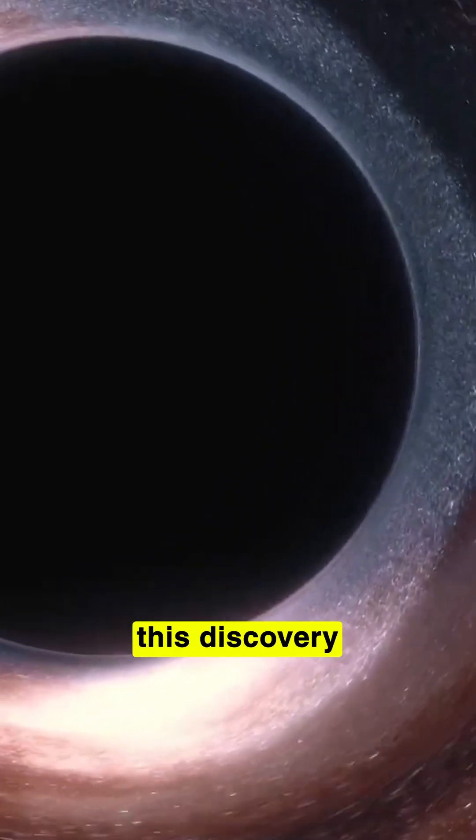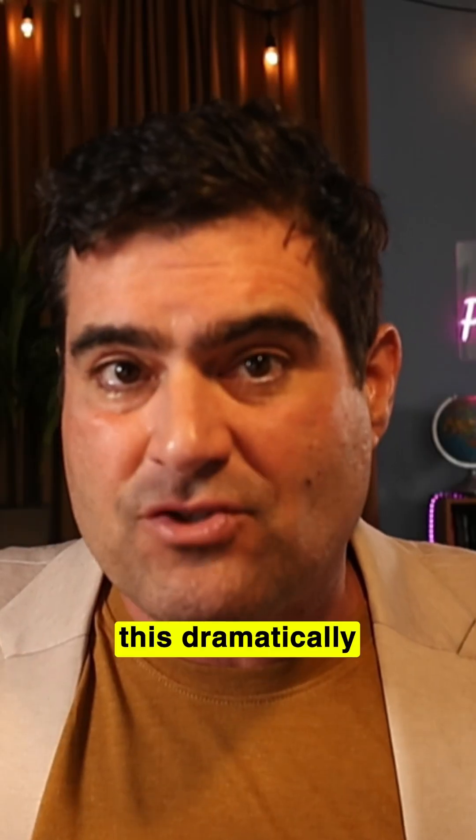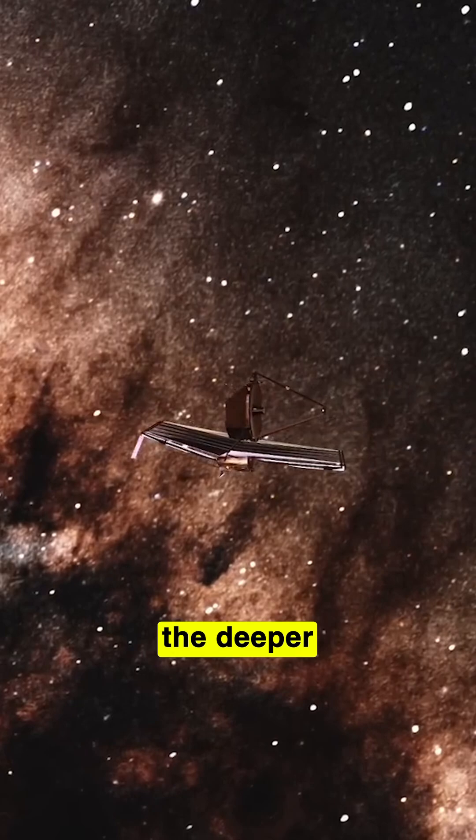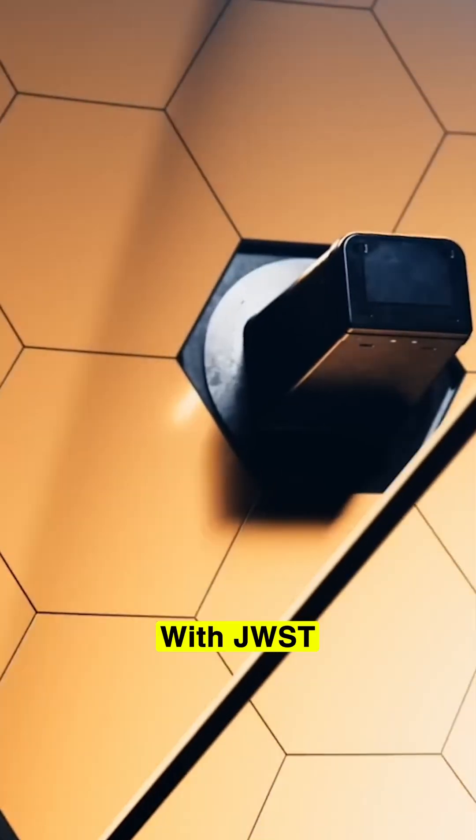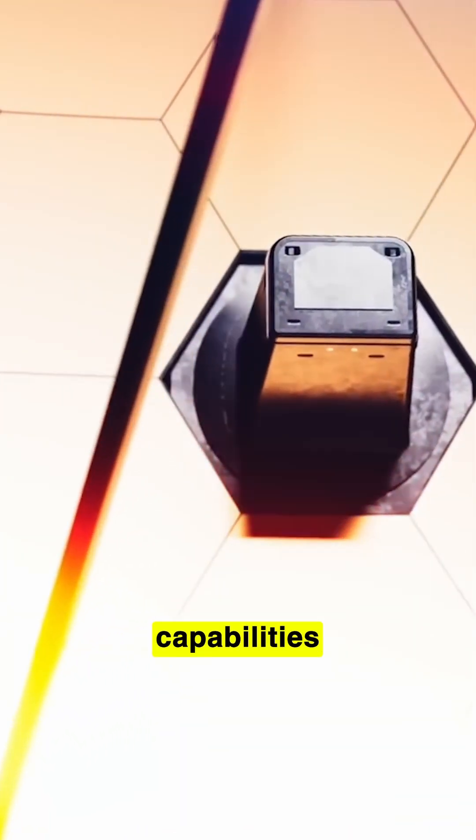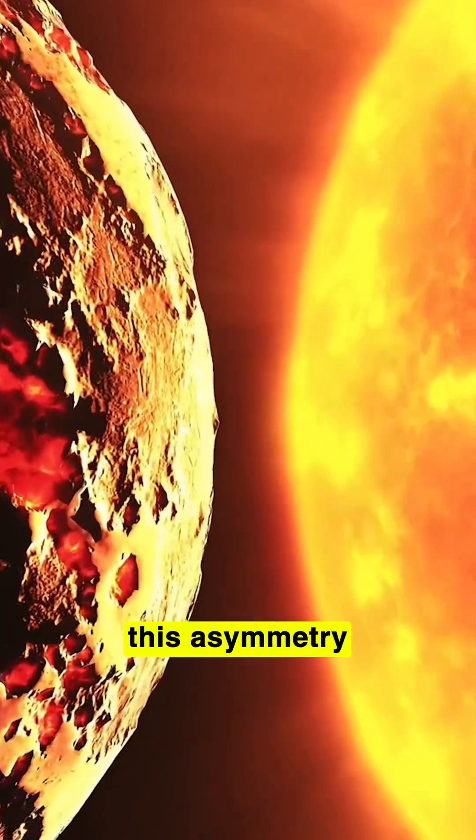What makes this discovery truly extraordinary is that this pattern has been detected before in Earth-based telescopes, but never this dramatically and never from space like this. The deeper we look into space with JWST's unprecedented imaging capabilities, the stronger this asymmetry becomes.